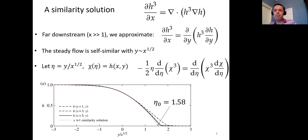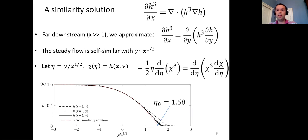Far downstream, we expect the behavior to become self-similar. Taking the governing equation and considering large x, the second-order x-derivative on the right-hand side becomes negligible compared to the other terms, giving an approximate equation. This system is self-similar in steady flow with y scaling like √x. So we seek a similarity solution with η = y/√x, writing χ(η) = h(x,y), and obtain a second-order ODE for χ. To solve it numerically we shoot from η to 0, requiring χ to be linear near χ = 0 and matching χ → 1 in the far field.